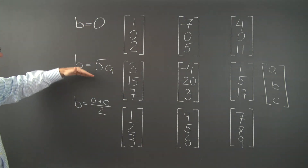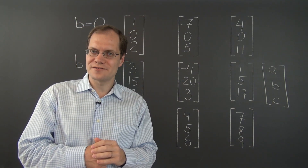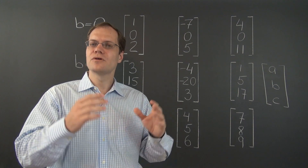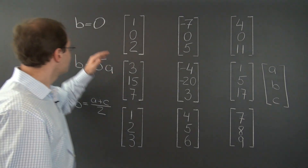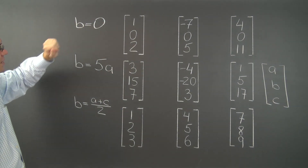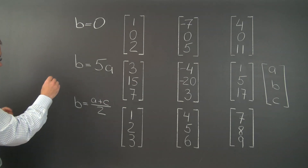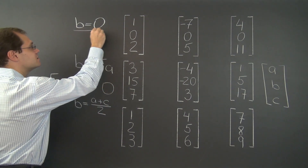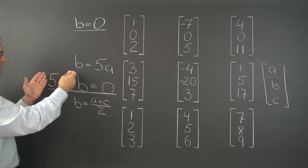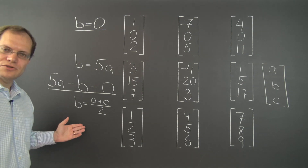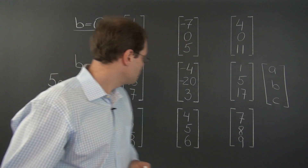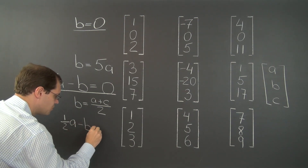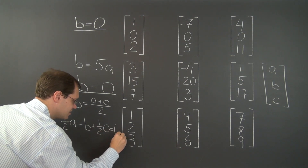So what do all of these expressions have in common? They can all be written as a linear combination of coefficients equal to zero. B = 0 is already in this form. B = 5A can be rewritten as 5A − B = 0 — a linear combination of coefficients equals zero. And B = (A + C)/2 can be written as (1/2)A − B + (1/2)C = 0 — again, a linear combination of coefficients equals zero.